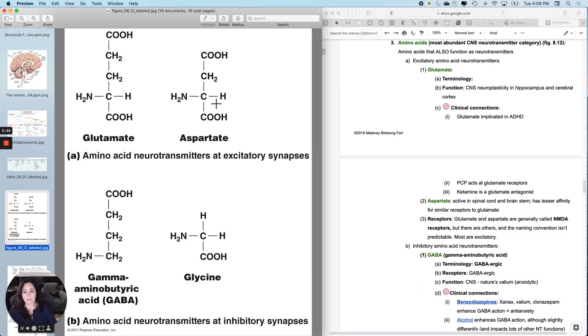And then aspartate does something similar, but primarily in the spinal cord and the brain stem, not the hippocampus and the cerebral cortex.